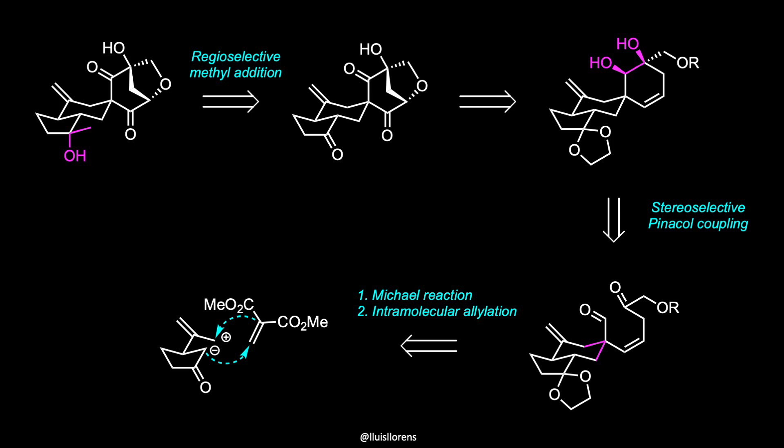Finally, the construction of the hydrindane core, giving way to the formation of the spirocycle, was accomplished from the merger of these two molecules through a Michael reaction and an intramolecular allylation.